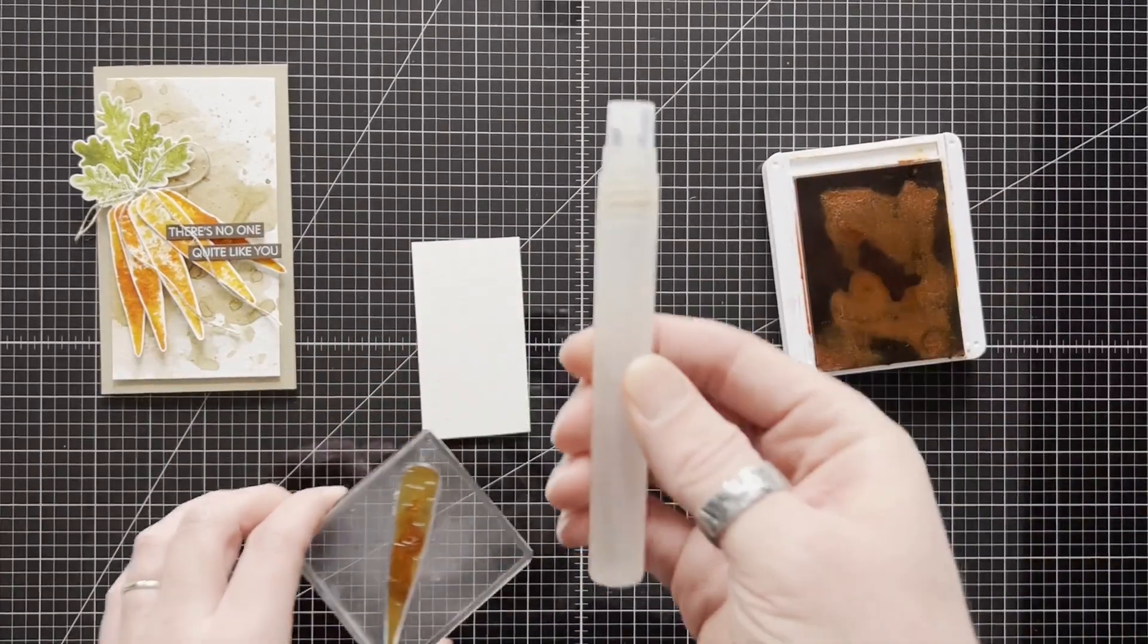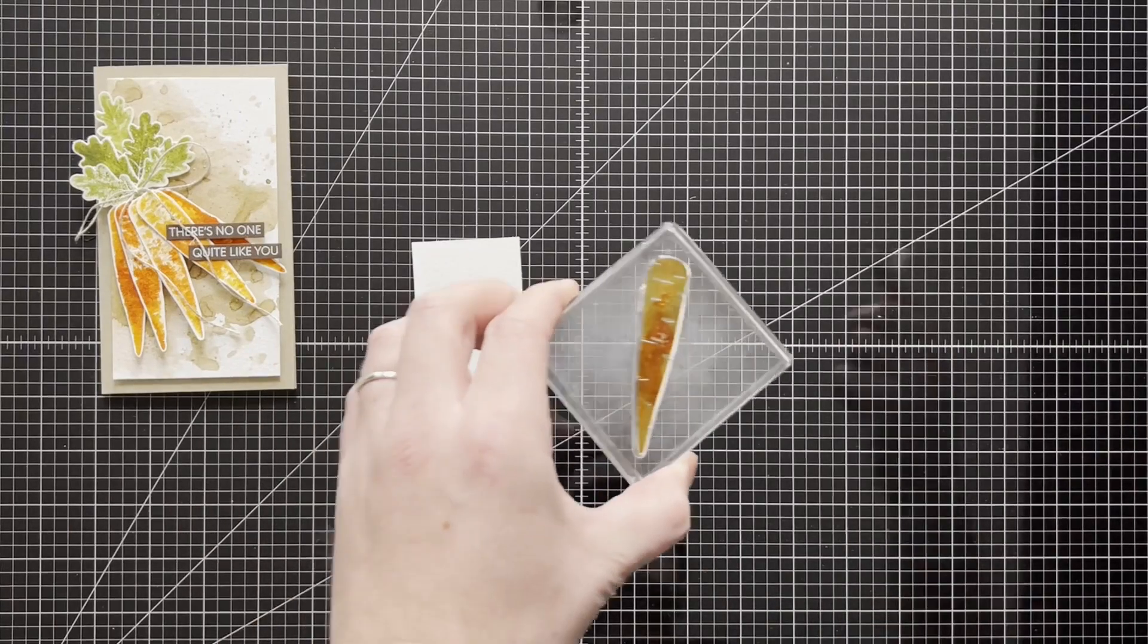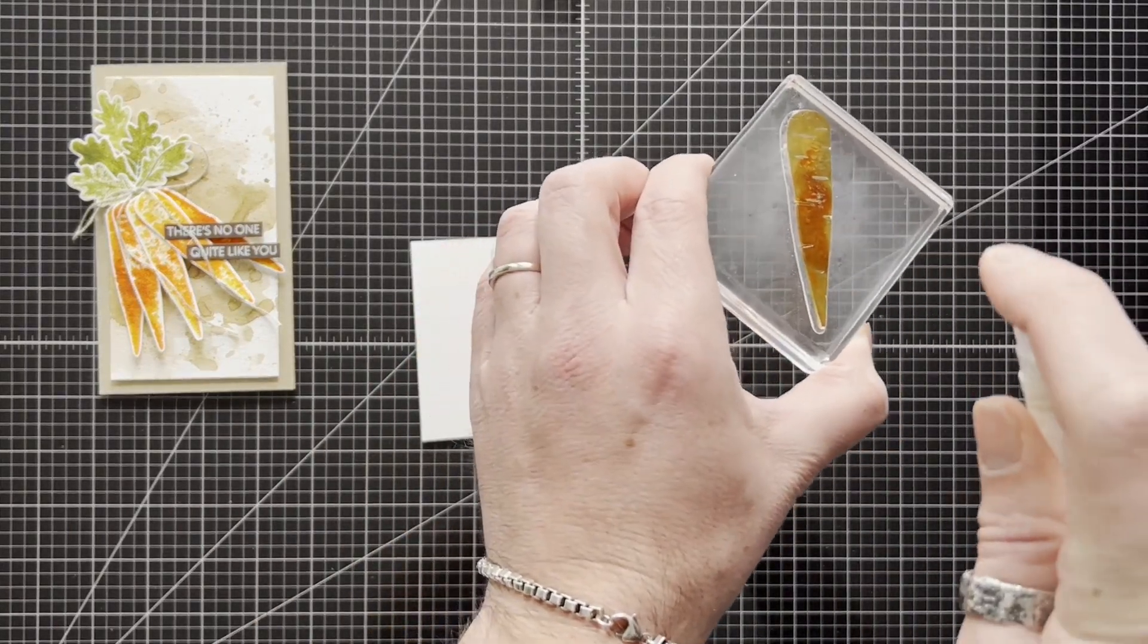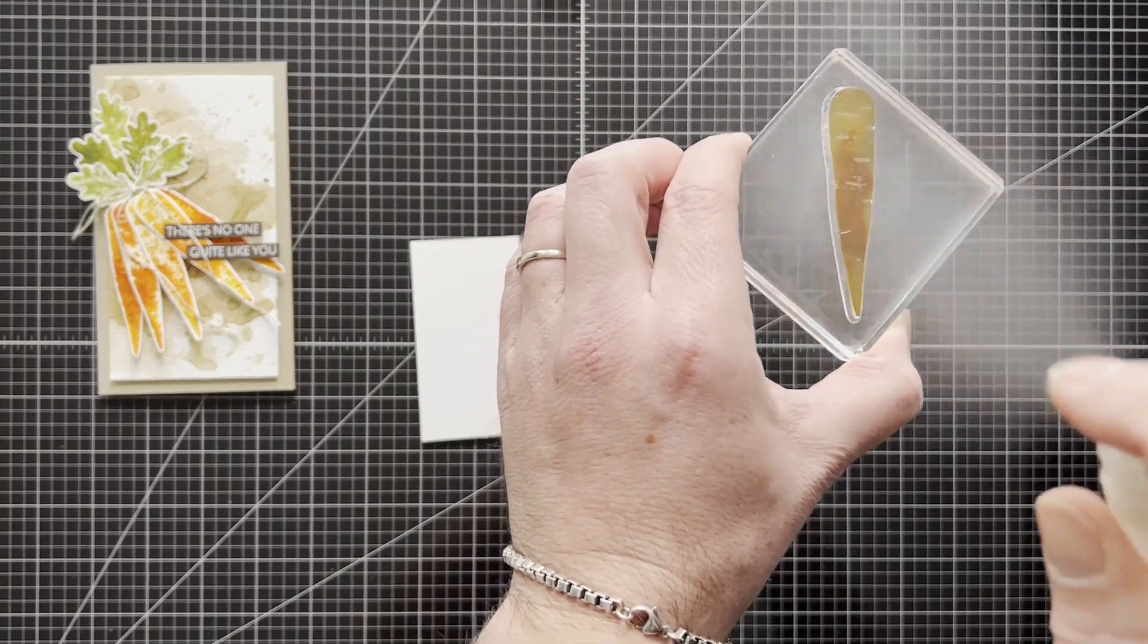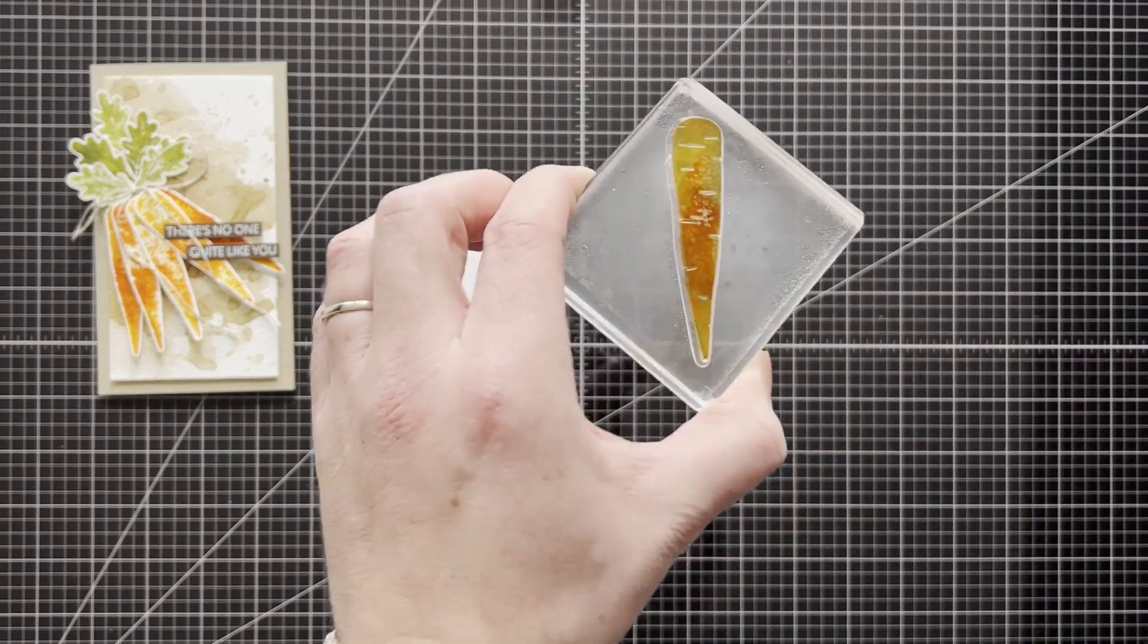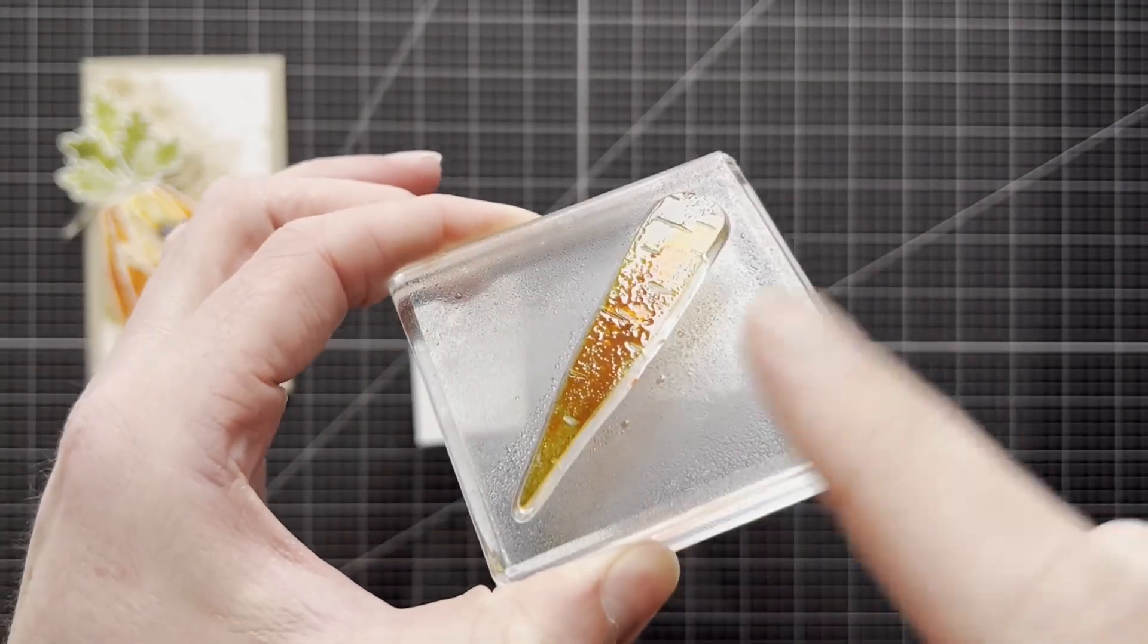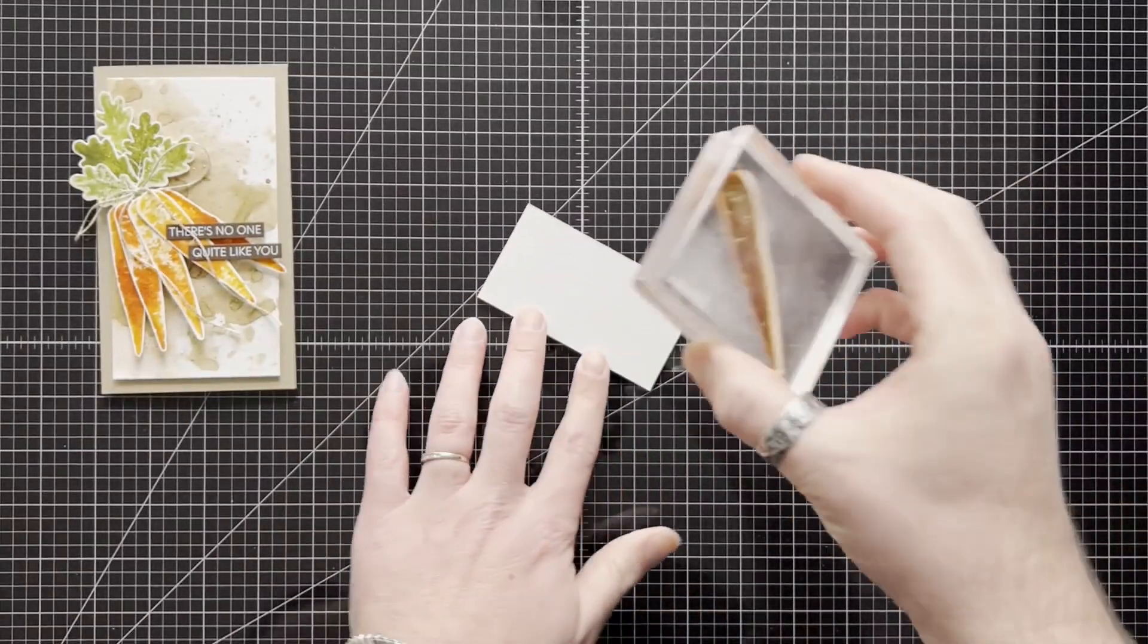I'm going to grab my stamping spritz, which is currently available, and I'm going to give it two spritz of water. I'm actually just going to activate the ink on the stamp and kind of boil it up and that's what's going to achieve our watercolor effect.